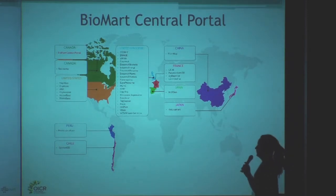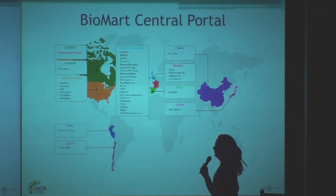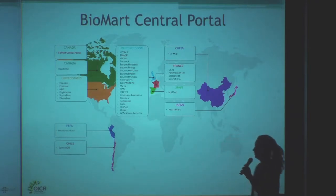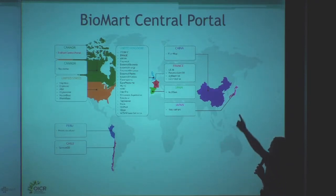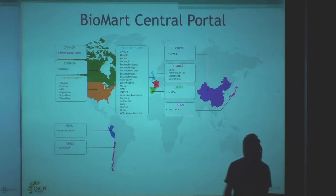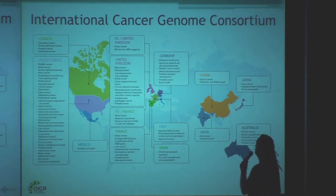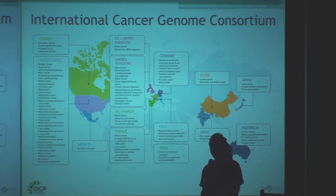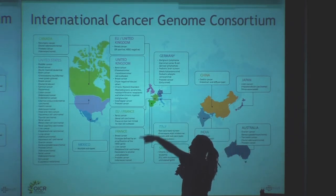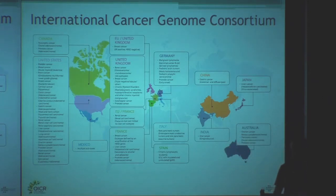What we actually offer through our central portal — we don't host all this data, but we have this portal which allows you to access all these databases. One of the biggest ones is probably Ensembl, and we have Cosmic, Reactome, and all these other databases which you can access through one website, the central portal. Then there's also the International Cancer Genome Consortium, which does cancer research, and they have all these databases which are federated in a single BioMart which you can access.